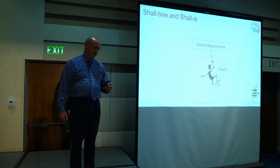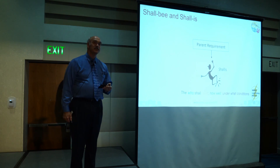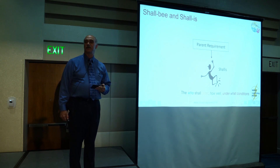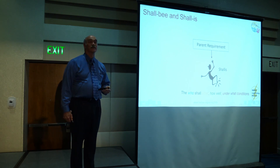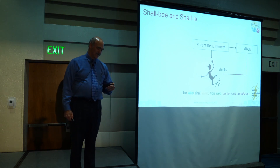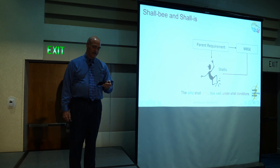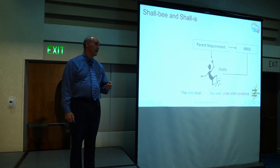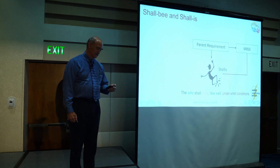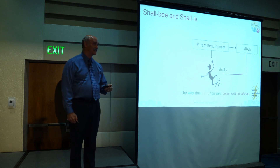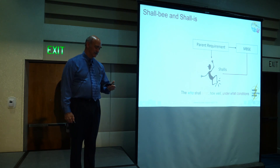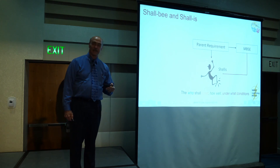Shall Be noticed that her friend Shall Is was different. She was self-confident; she knew who she was, could observe and measure her function, and knew when she was supposed to do it. Shall Be asked Shall Is why she was different. Shall Is told her that her parent had been sent to MCI to be analyzed, decomposed, allocated, and measured. Shall Be was puzzled — her parent had been allocated, but never analyzed or decomposed. It sounded scary.